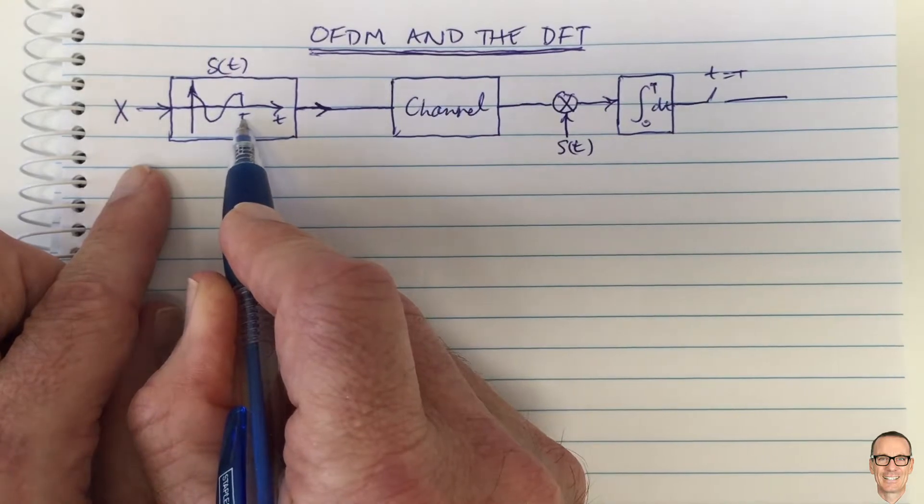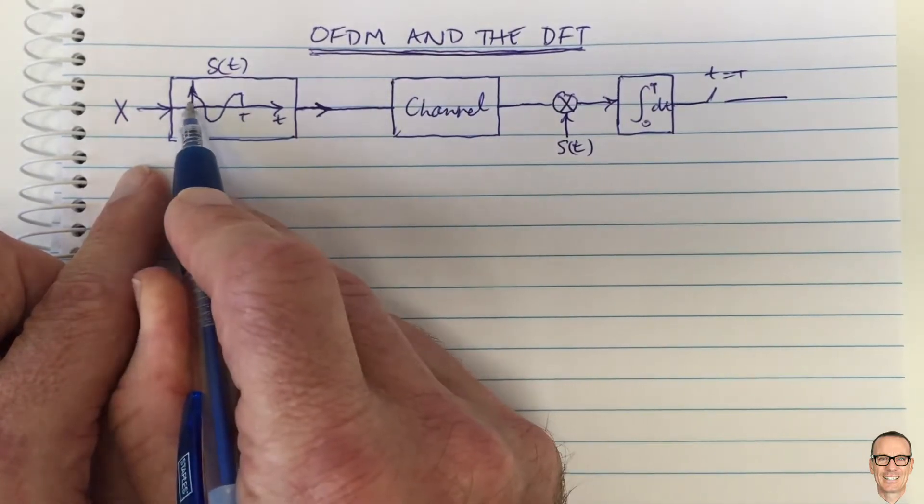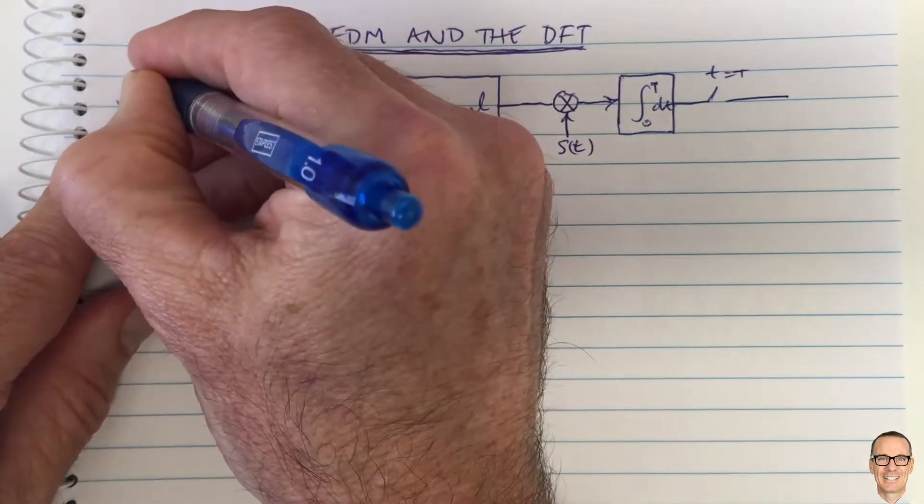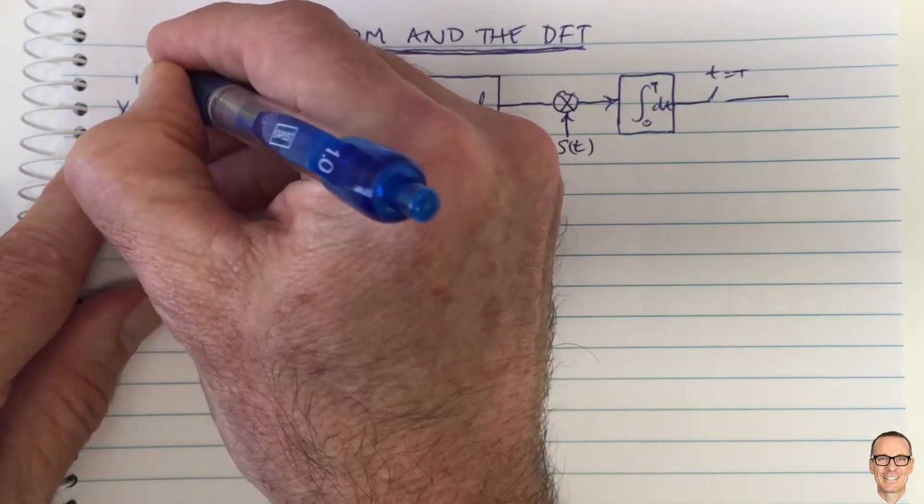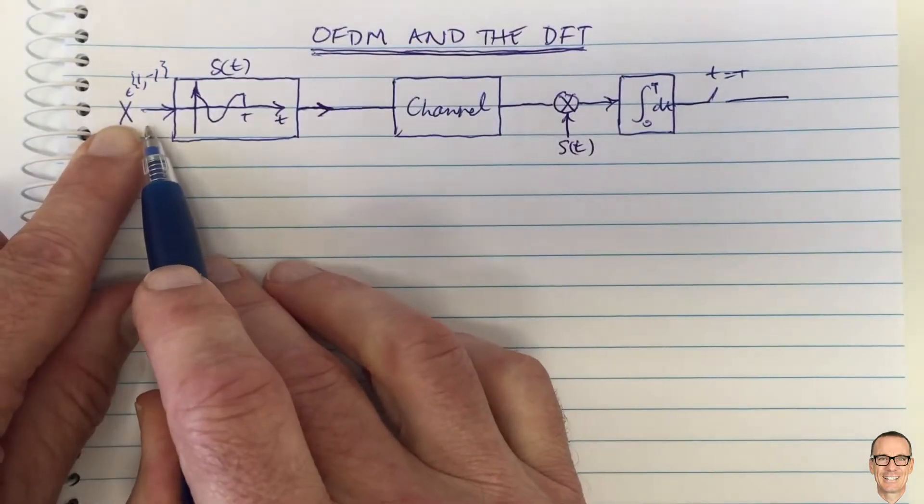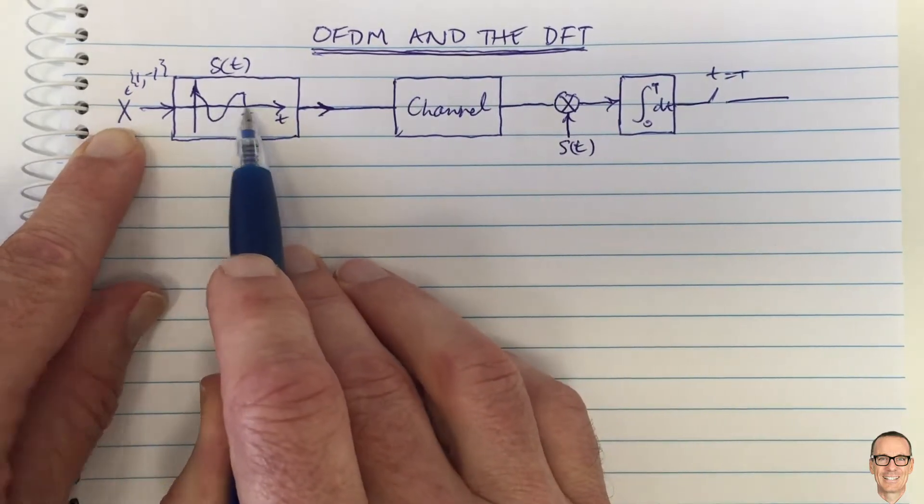Then you turn it off at time T. So for a period of T, we're going to be sending either X will be either a 1 or a minus 1. That's how you send binary digital data: you either turn this on positive or turn it on negative.